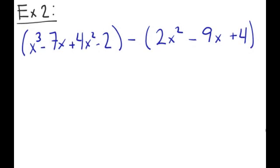So here's our first polynomial: x cubed minus 7x plus 4x squared minus 2. And remember, since we've got this negative sign here, all you're going to do is multiply through. So you're going to change your minus to a plus. Your positive 2x squared becomes a negative 2x squared. This now becomes a positive 9x. And this now becomes a negative 4.